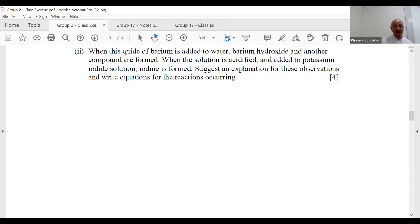When this oxide of barium, which we know already, is added to water, barium hydroxide and another compound is formed. When the solution is acidified, so add some acid in, added to potassium iodide, iodine is produced.